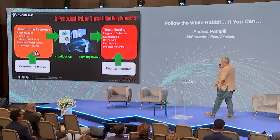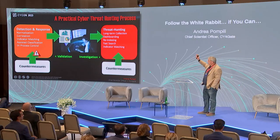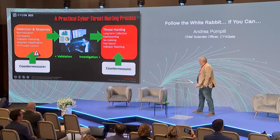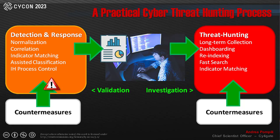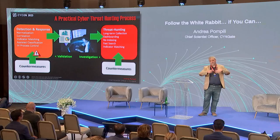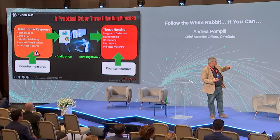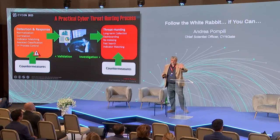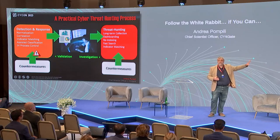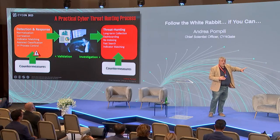This is a more technical view. I divide the world into two main pillars: the validation process and the investigation process. The validation process means I have countermeasures, I have an alert, I perform normalization, correlation, indicator matching, because I discovered something wrong. This is typically done by SIEM or SOAR. A report is sent to people, and then the SOC — Security Operations Center — or CERT tries to contain the problem using information from the report. I need only to validate that an incident is in place and react to it.